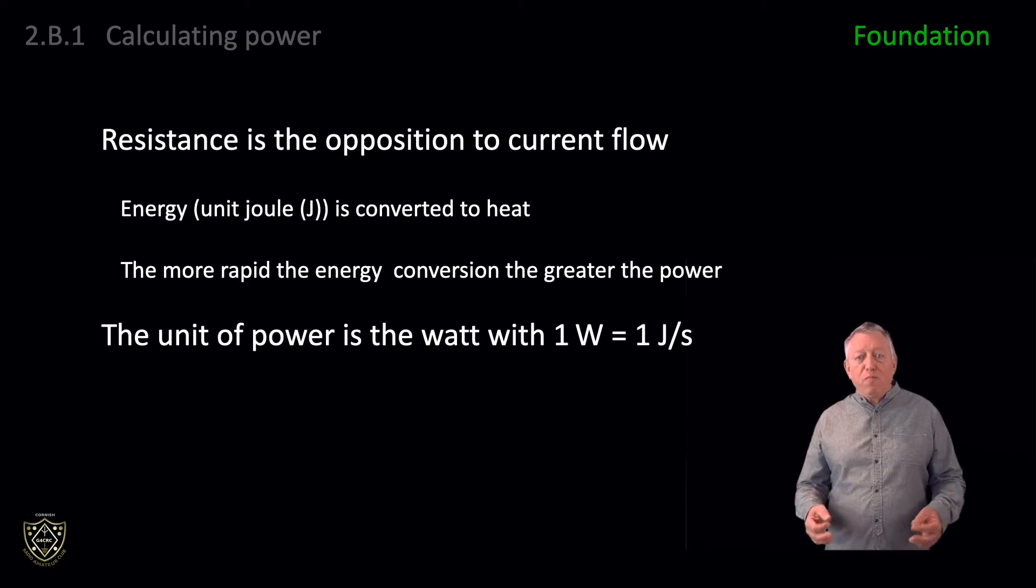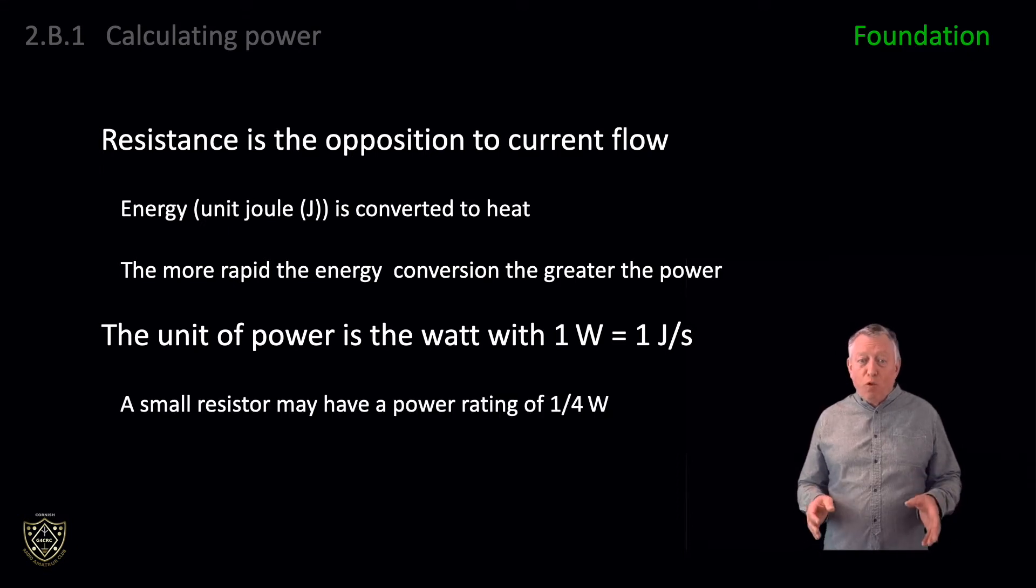The unit of power is the watt, with one watt equal to one joule per second. Electronic components have power ratings which indicate how much power they can dissipate without damage. For example, a small resistor may have a power rating of one quarter of a watt. The learning point is the rate of energy conversion is power measured in watts, with unit abbreviation capital W.